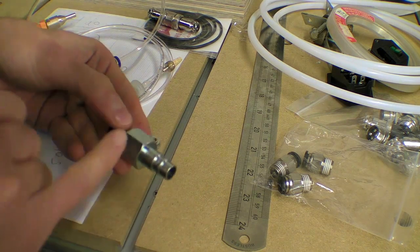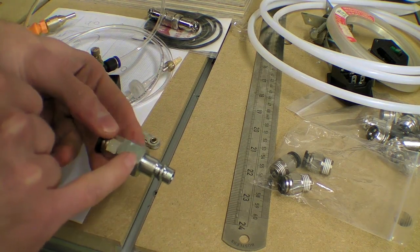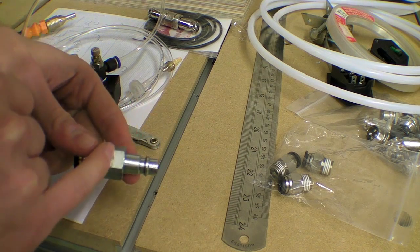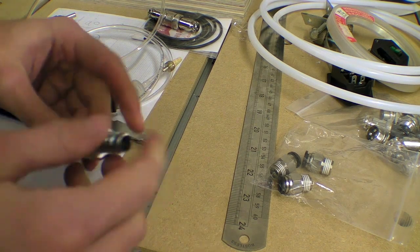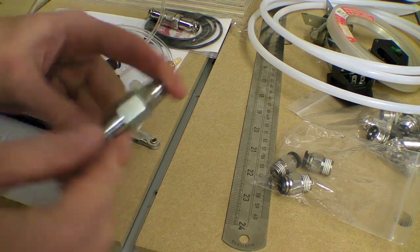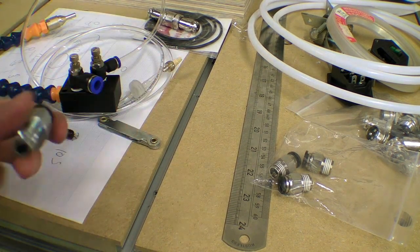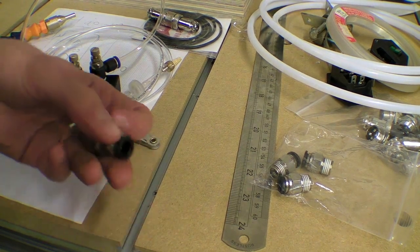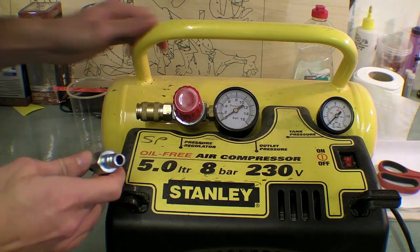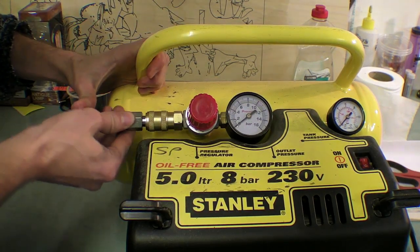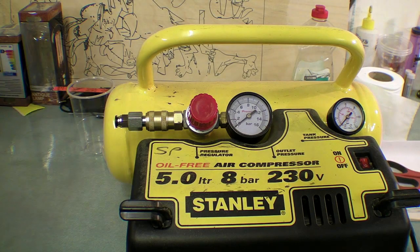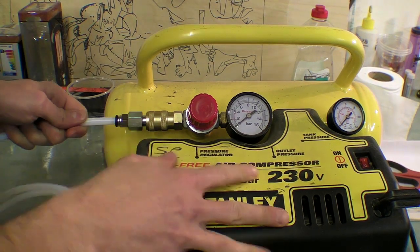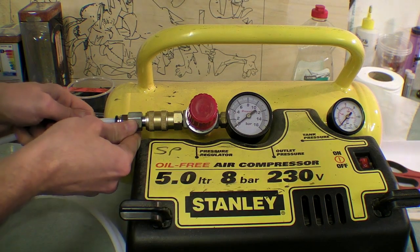This piece only cost me a couple of pounds. I managed to find one part on eBay for a couple of quid, and the other piece was actually in a reduced section in a tool store for a pound. So pretty cheap. A lot cheaper than buying an external regulator from the one on the compressor. So this simply fits here, and the pipe goes in like that.